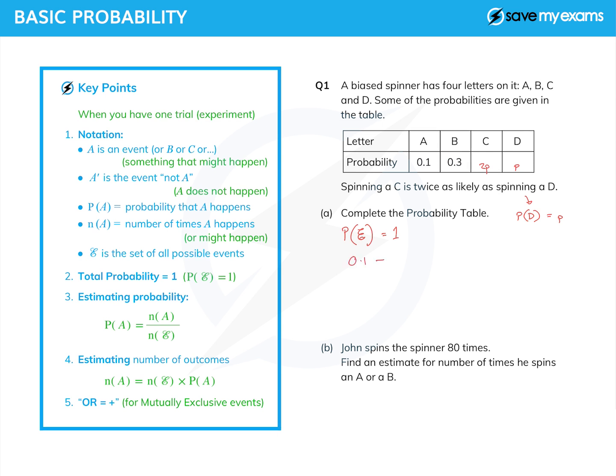So 0.1 plus 0.3 plus 2P, which is the probability that C is achieved, plus P, which is the probability that we get a D, and that equals one. And we've got a little equation to solve. 0.1 plus 0.3 is 0.4. And 2P plus P is 3P, and that equals one.